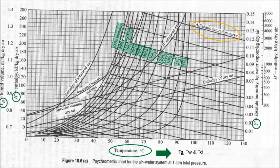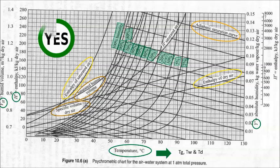The adiabatic saturation curve is also shown. In addition, the enthalpy of saturated and dry air lines are also present. Finally, the saturated humid line as well as the specific volume dry air line are also present.